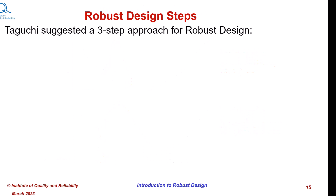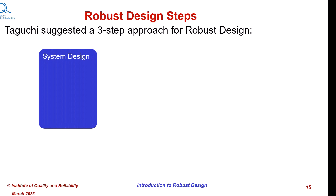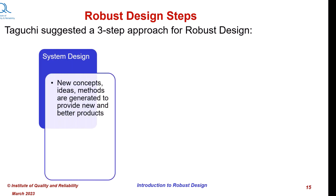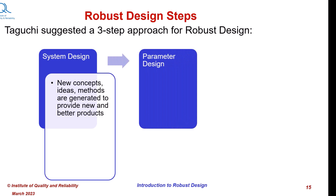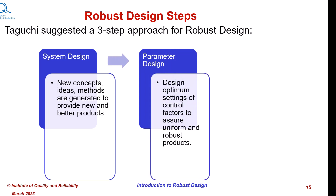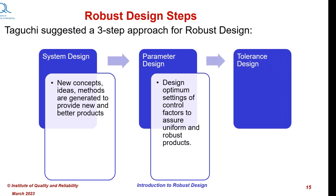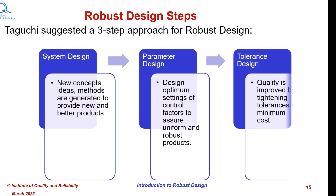Dr. Taguchi suggested a three-step approach for robust design. Step one: system design, when new concepts, ideas, and methods are generated to provide new and better products. Step two: parameter design, designing optimum settings of control factors to assure uniform and robust products. Step three: tolerance design, when quality is improved by tightening tolerances at minimum cost.